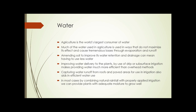Water. Agriculture is the world's largest consumer of water. In the United States, as much as 70% or more of our water usage goes to agriculture — some estimates put it as high as 85%. Much of the water used in agriculture is used in ways that do not maximize its effect, causing tremendous losses through evaporation and runoff.